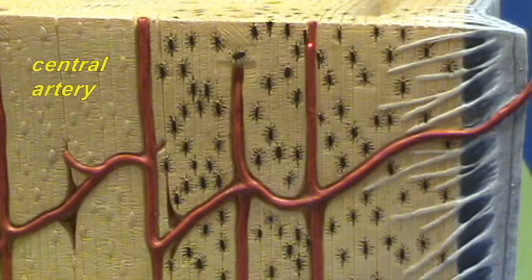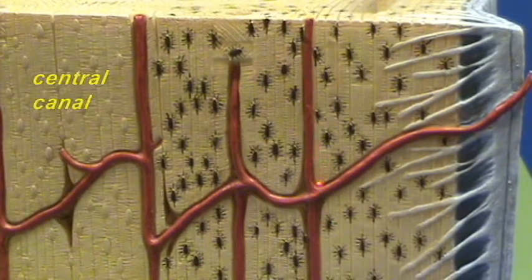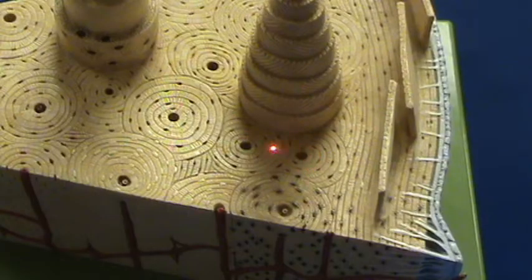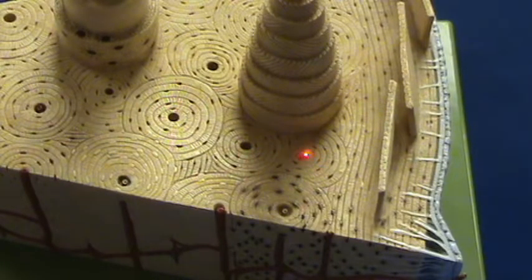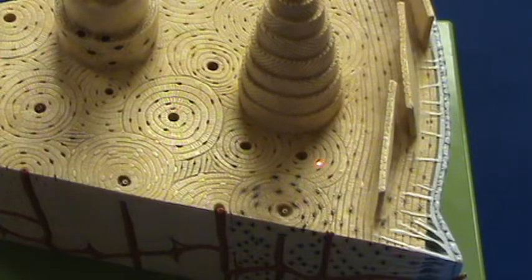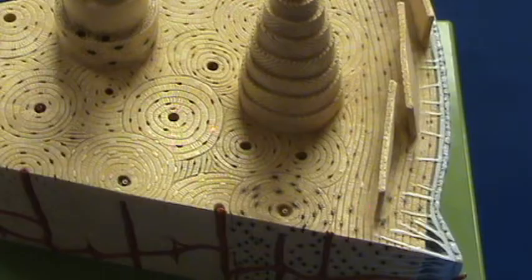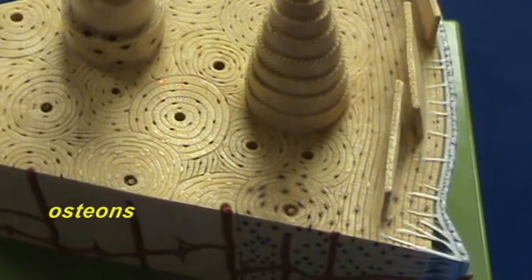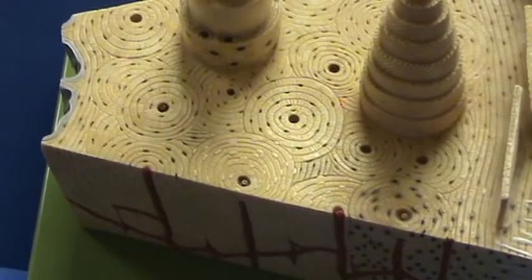They are going through what is called the central canal. As we go further inside the bone, notice that there is a difference in the way the lamellae are oriented here compared to the circumferential lamellae. What happens is that cylindrical structures called osteons are formed, and we can see an example of an osteon over here.